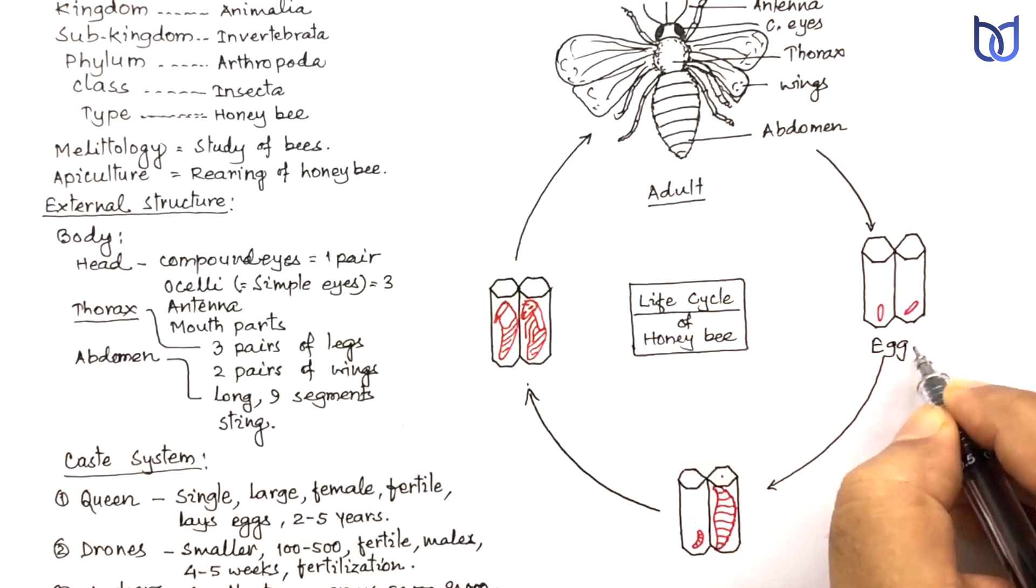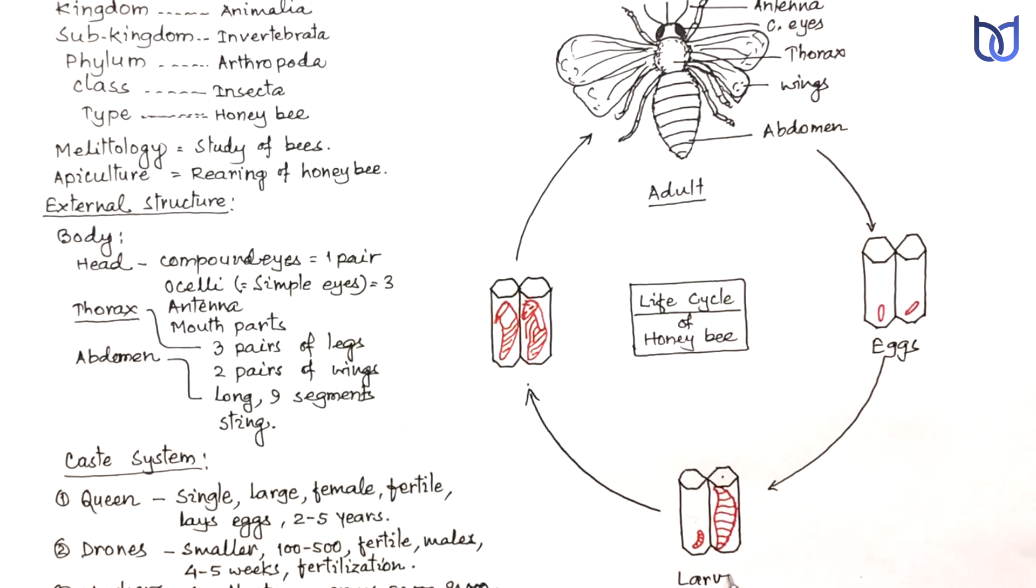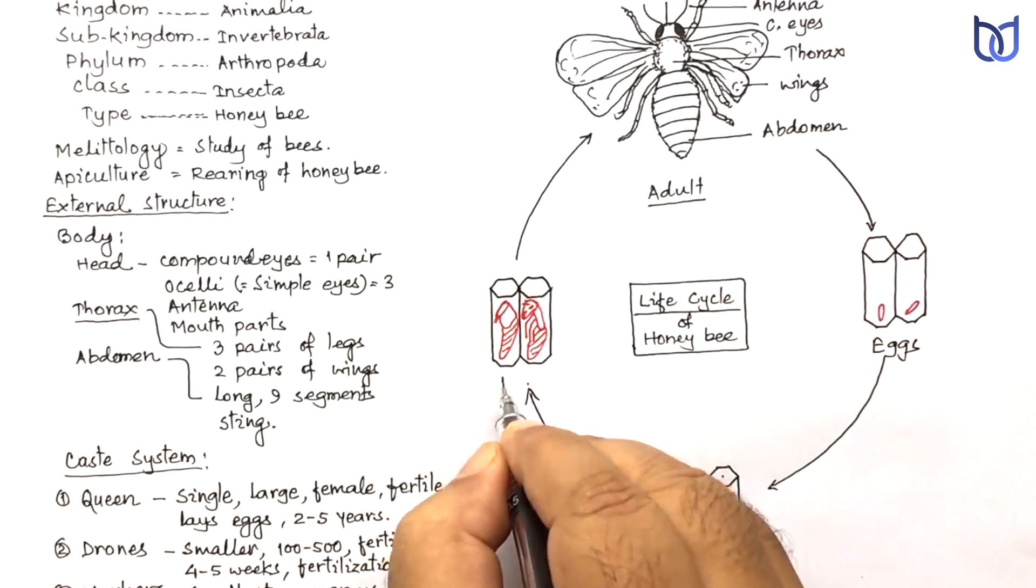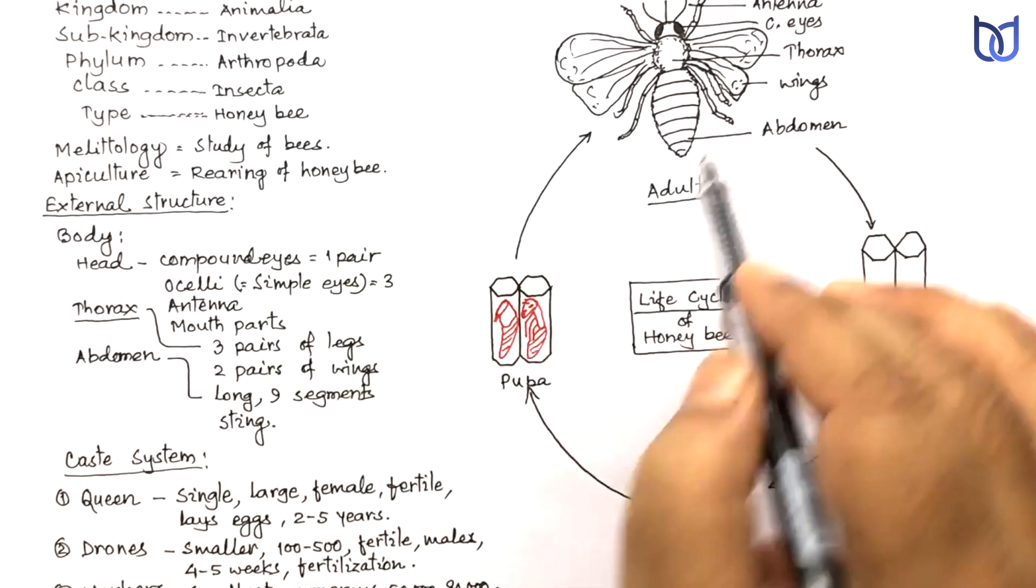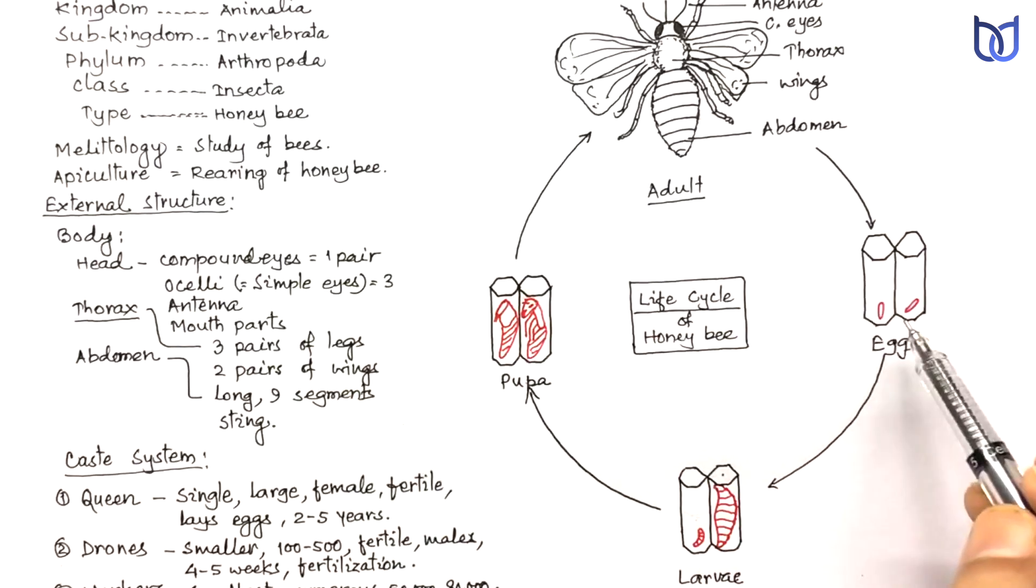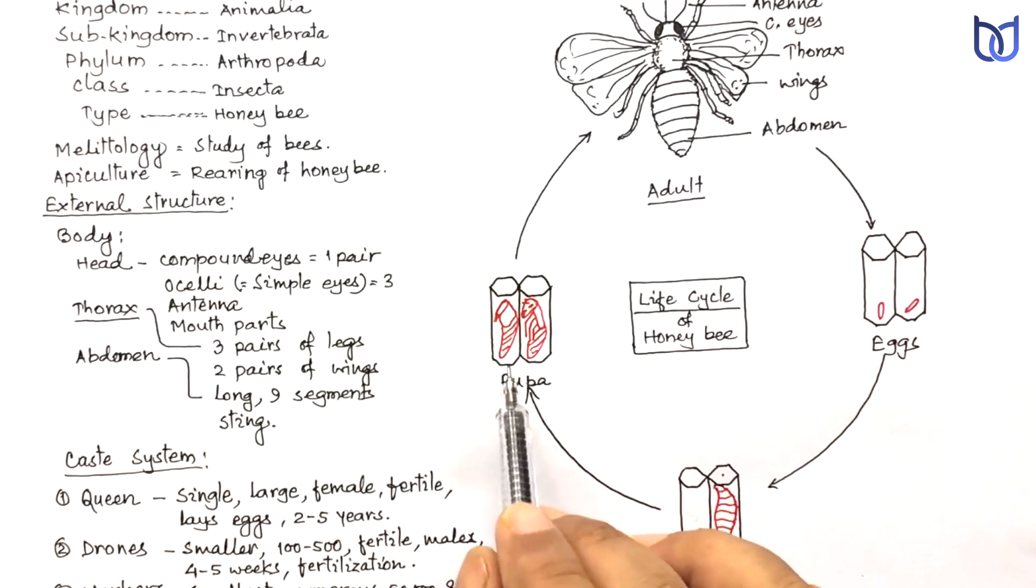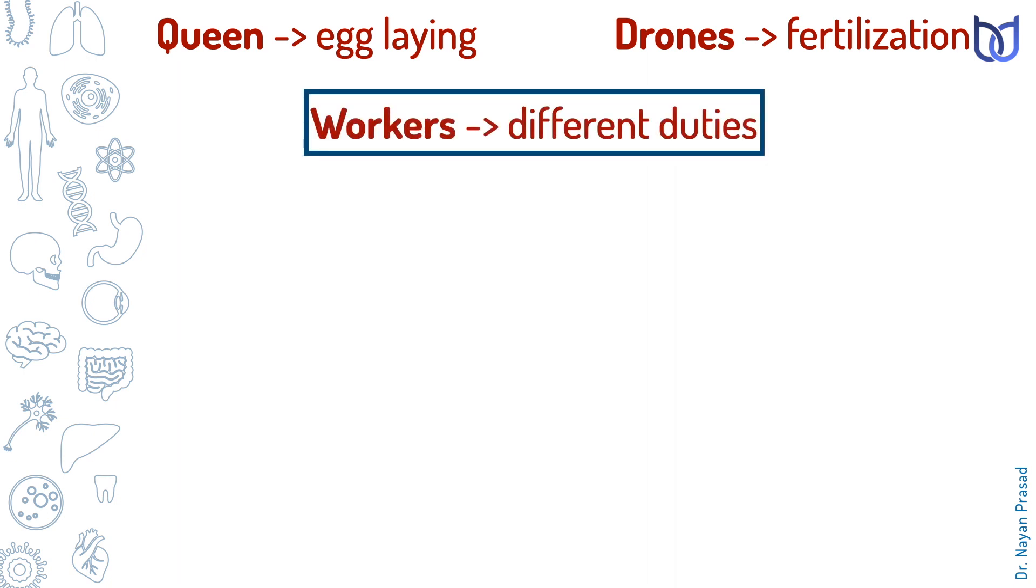In this diagram, we are seeing the eggs, larvae, pupa, and adult. Four distinct stages all develop inside the brood cells of the hive. Eggs are non-feeding stage, larvae is feeding stage, pupa is non-feeding stage, and adult performs different duties. Queen performs the duty of reproduction. Drones are for fertilization. And the workers perform different duties at their different lifetime.